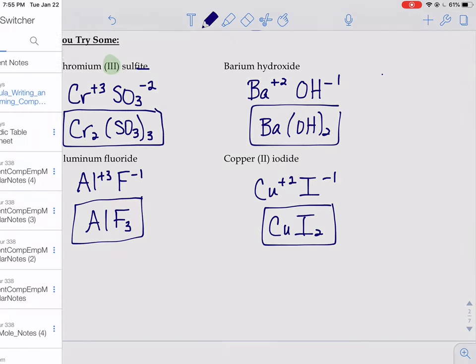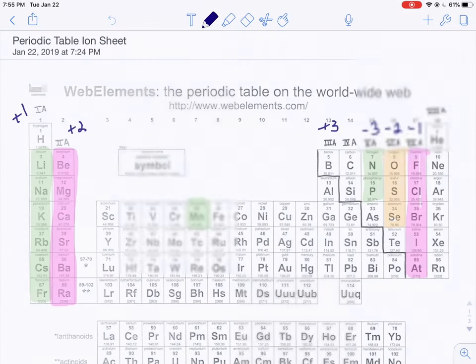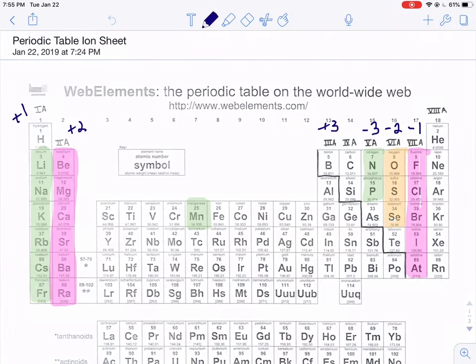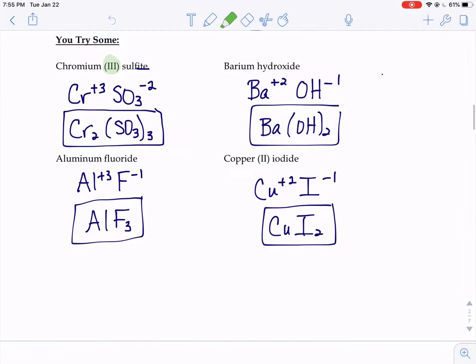We could tell what the charge of aluminum would be just by looking at the periodic table, because aluminum is right here in that positive 3 column. So aluminum is going to be a positive 3 every time.